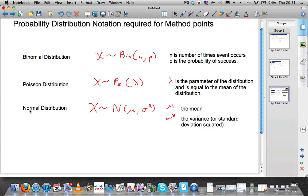So here are the three that show up the most. The binomial distribution, you write an X and then a squiggly and Bin for binomial and then the number of times the event occurs, comma, the probability of success. This is the notation that the examiner wants to see.